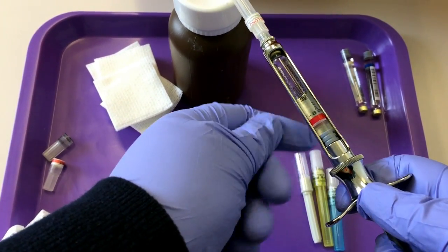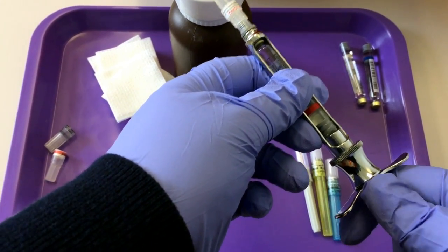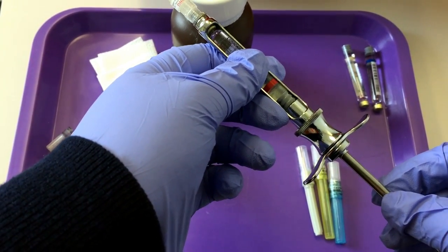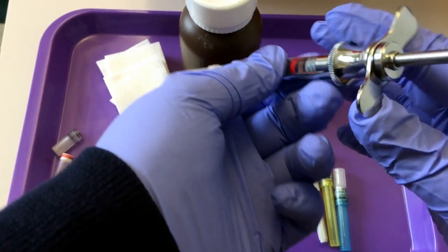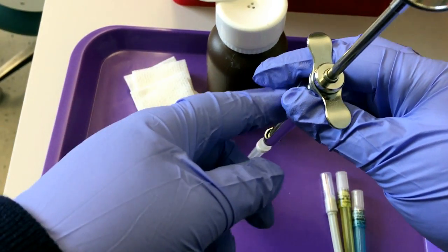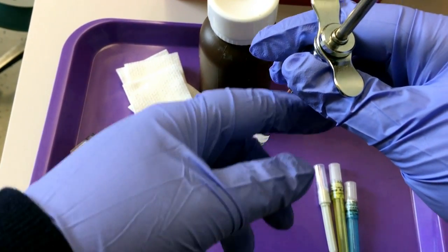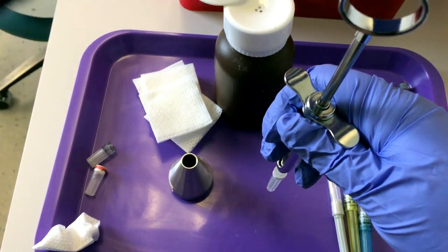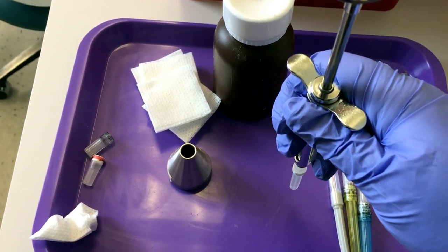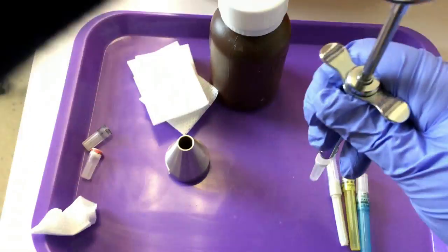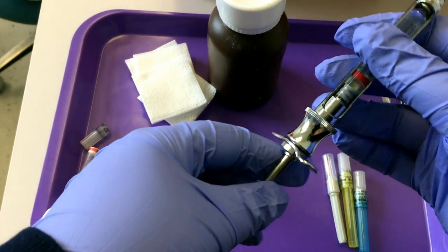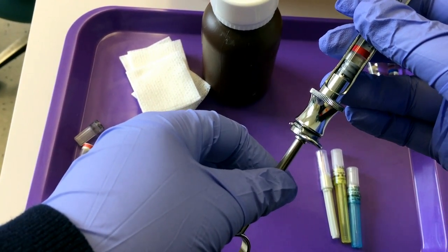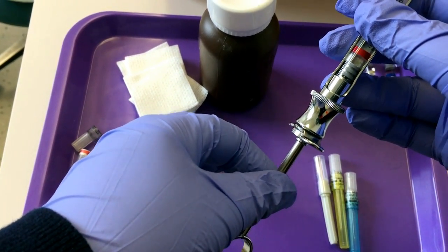Now we have to engage the harpoon. Right now it's loose. You can hear it wiggle around. To engage the harpoon, turn your assembly so that it is needle down and give it two quick smacks on the thumb ring. You can then try to wiggle your piston, and you hear that it is not moving.